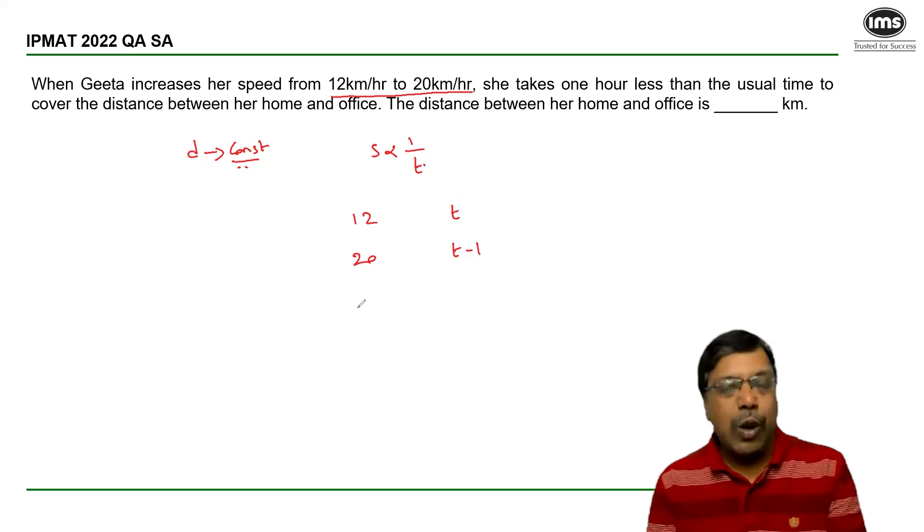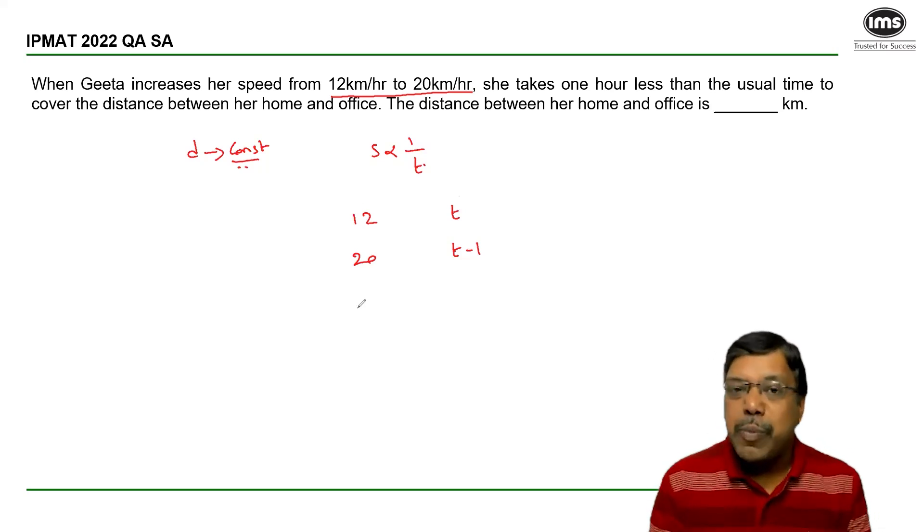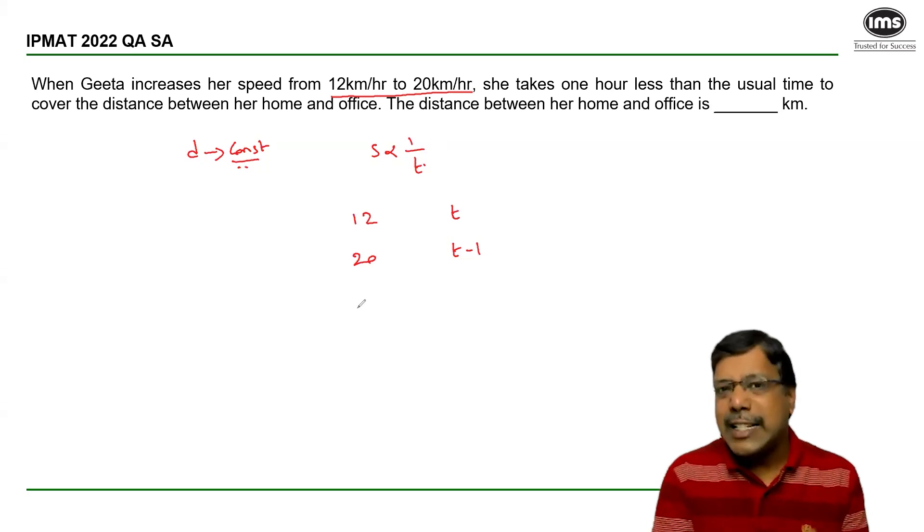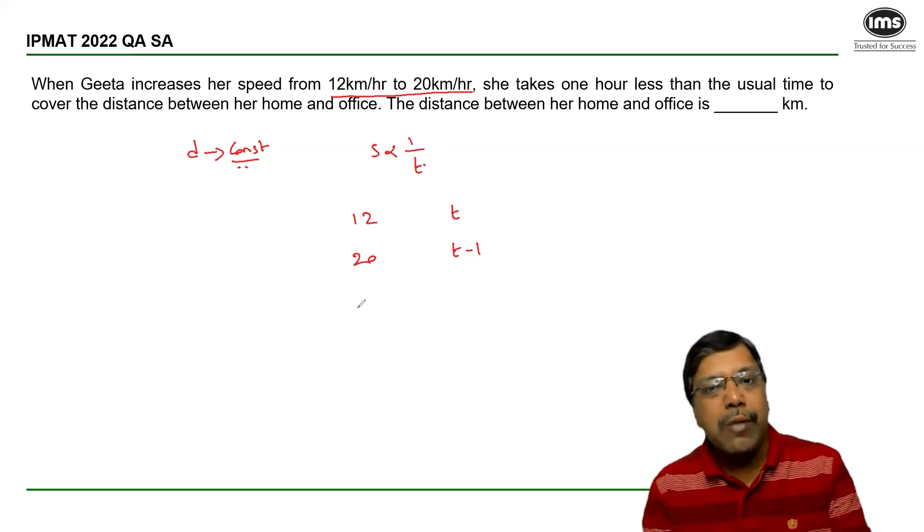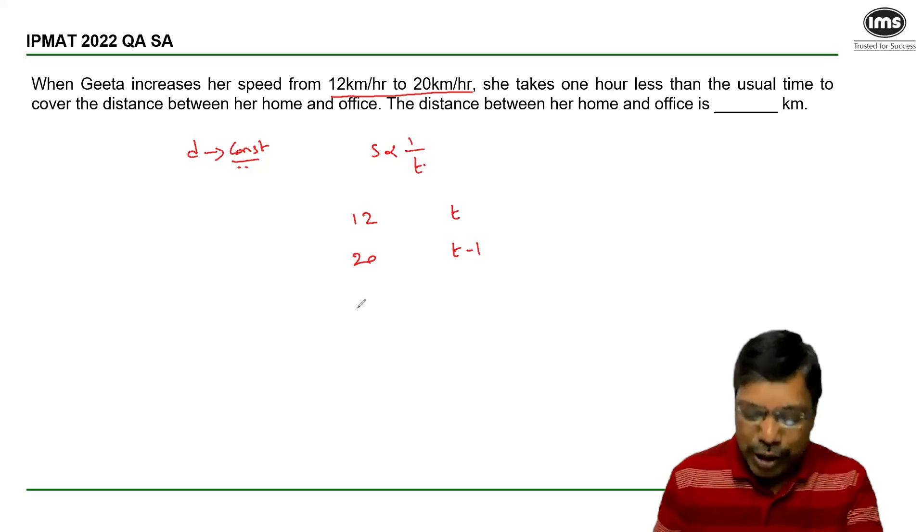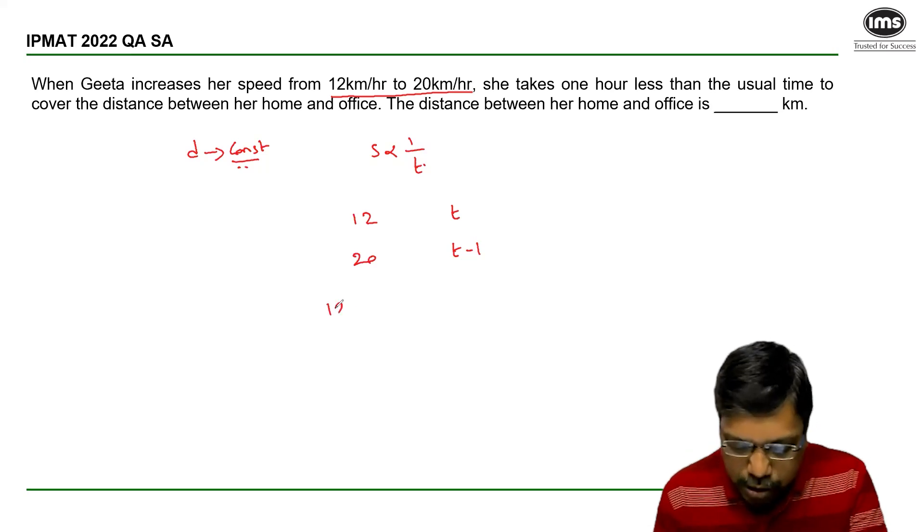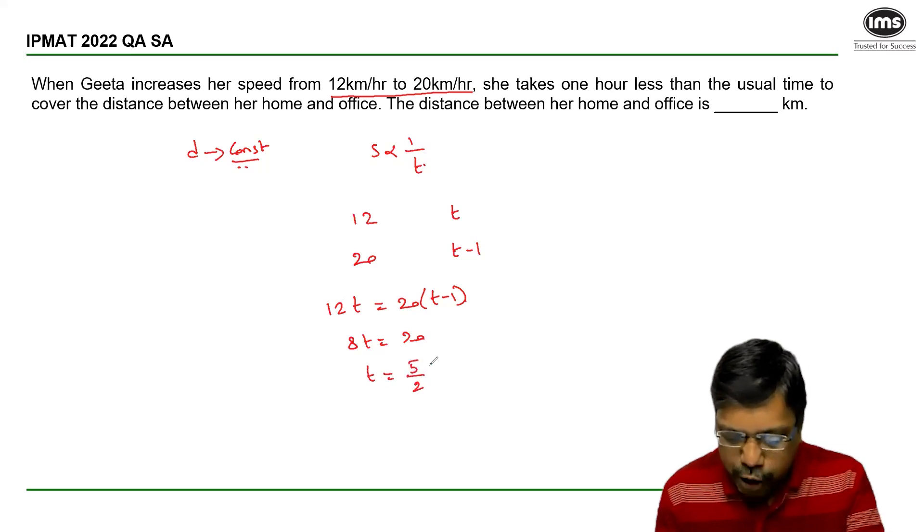I can say distance is constant, so ratio of speeds is equal to inverse ratio of the time taken, or I can say since distance equals speed into time, it is same in both cases. So 12t is equal to 20 into t minus 1. So 8t is equal to 20, or t is equal to 5 by 2 hours.